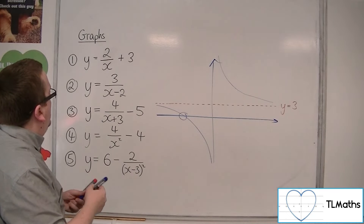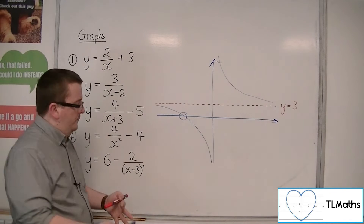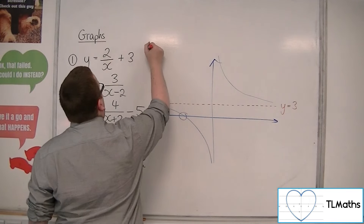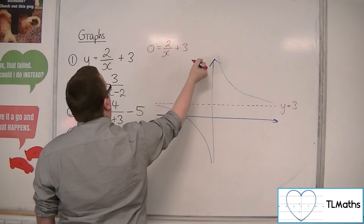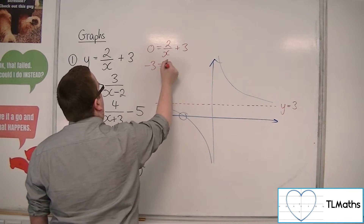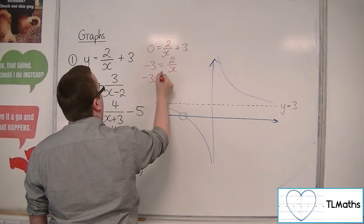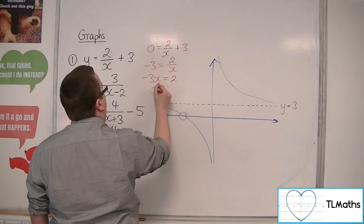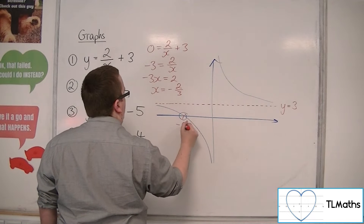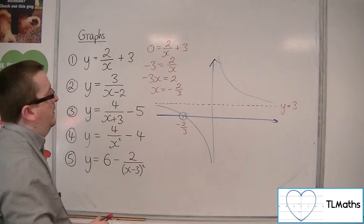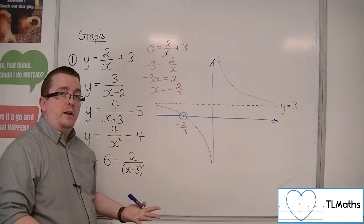We can determine that crossing point by setting y equal to 0: 0 equals 2 over x plus 3. Subtracting 3 from both sides, then multiplying up and dividing both sides by minus 3, gives x equals minus 2 thirds. So that is what y equals 2 over x plus 3 must look like.